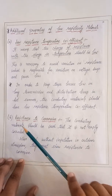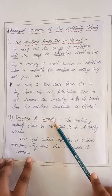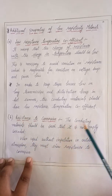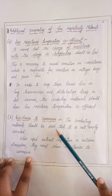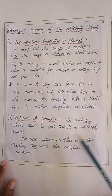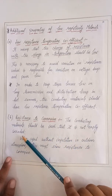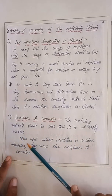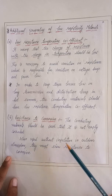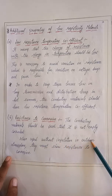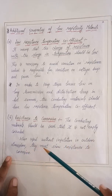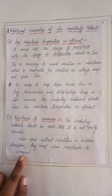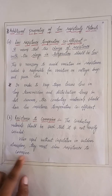The second property is resistance to corrosion. The conducting materials should be such that they are not easily corroded when used without insulation in an outdoor atmosphere. They must show resistance to corrosion.